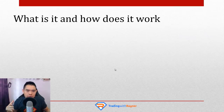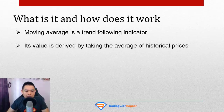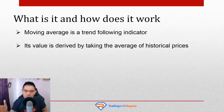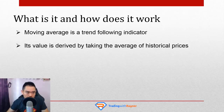First and foremost, what is the moving average indicator about and how does it work? Moving average is a trend-following indicator. It works best in a trending market. The way a moving average value is derived is based on this concept: its value is derived by taking the average of historical prices. Most moving average looks at the closing price by default, but most platforms allow you to change it to look at the high, the lows, or even the open. I'm just going to go with the close.